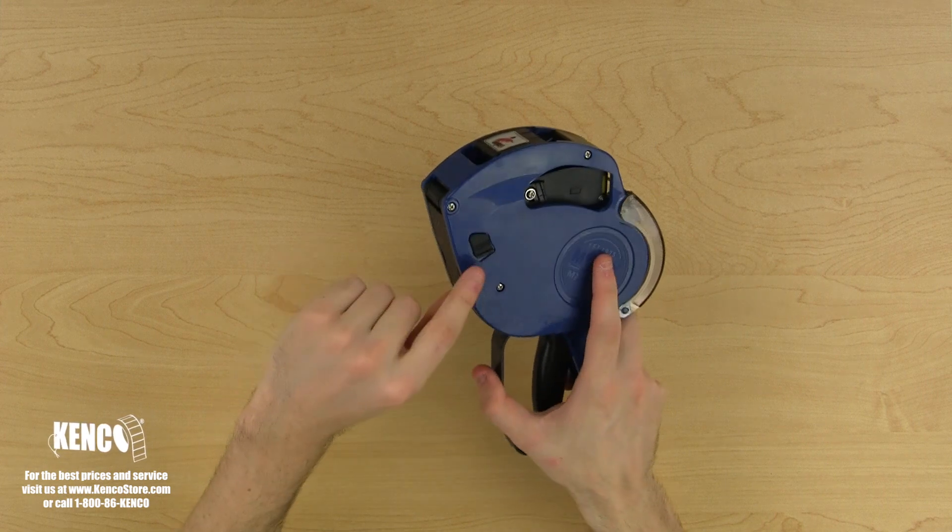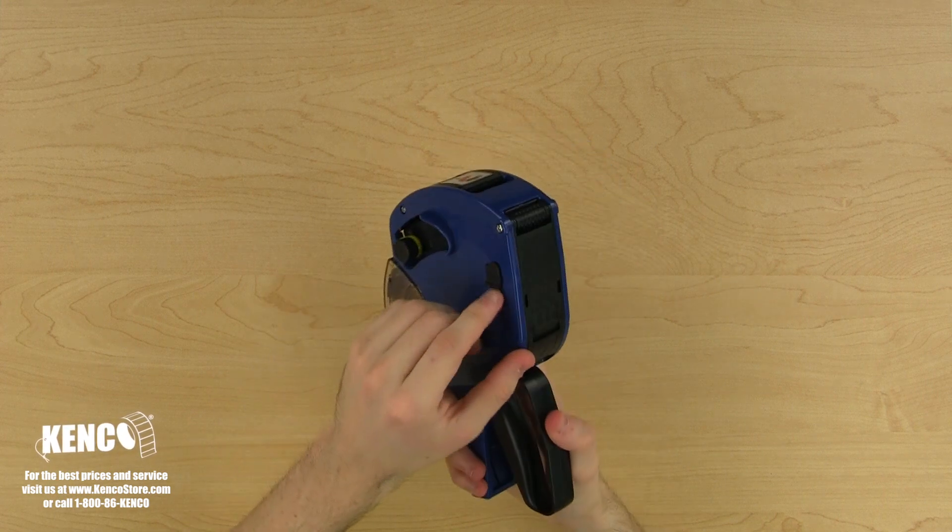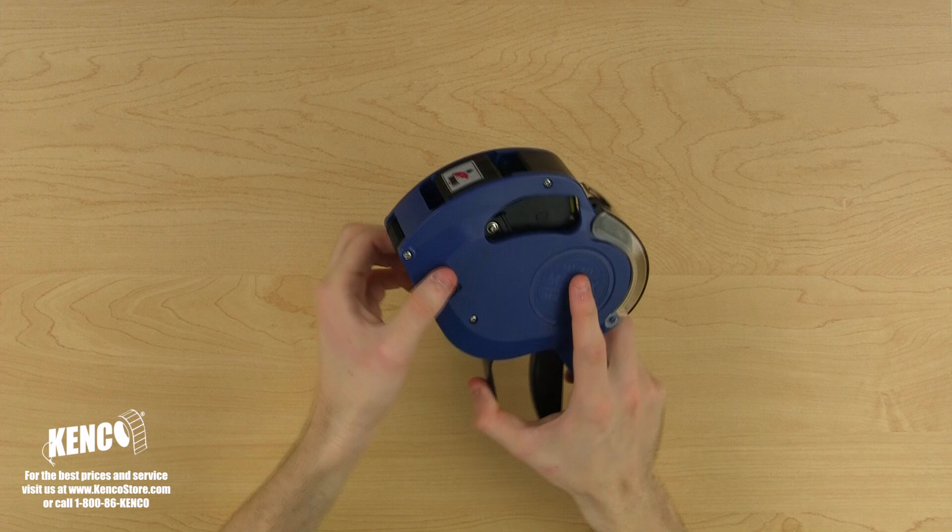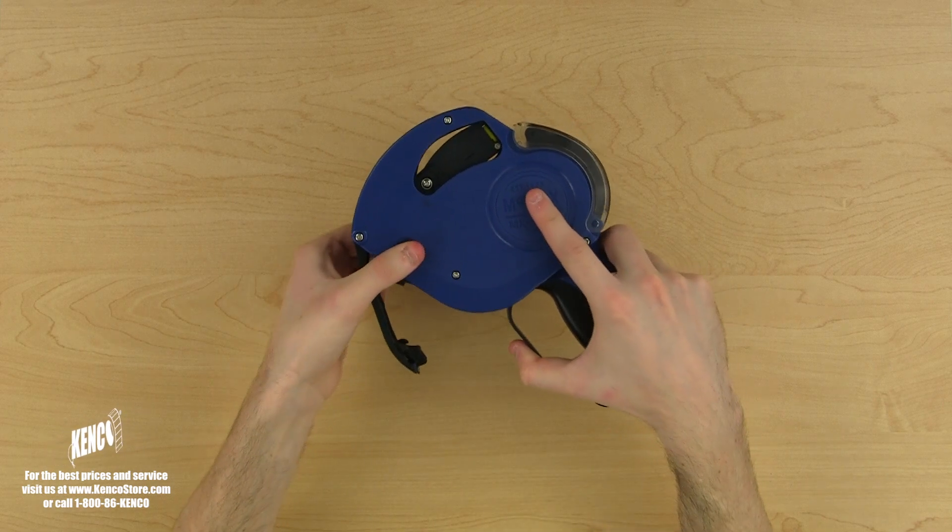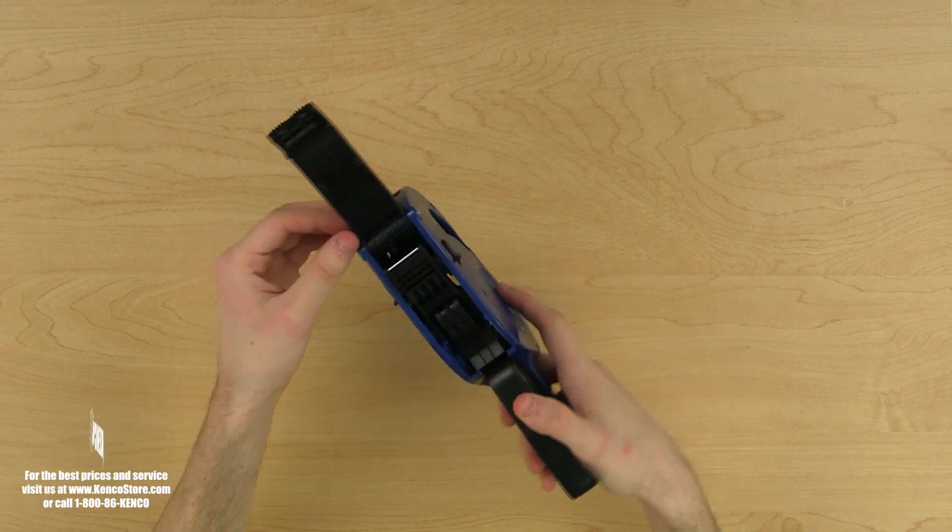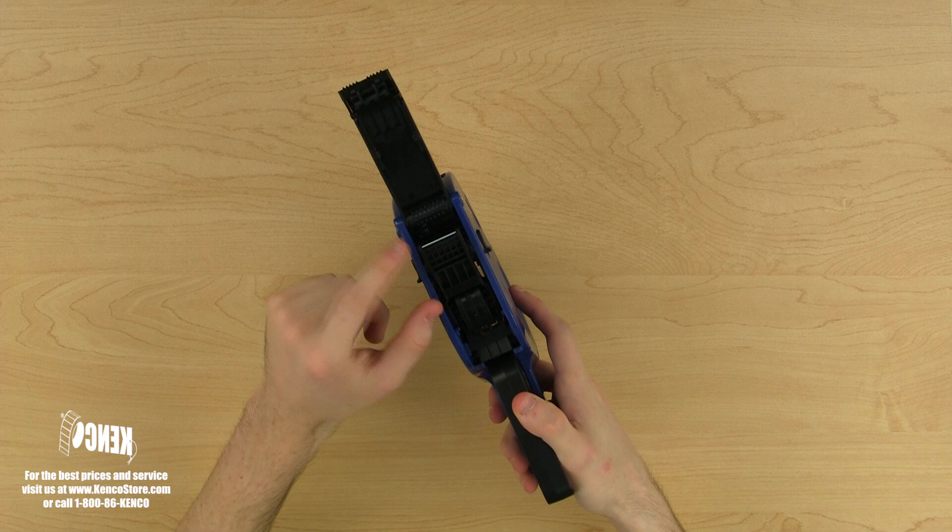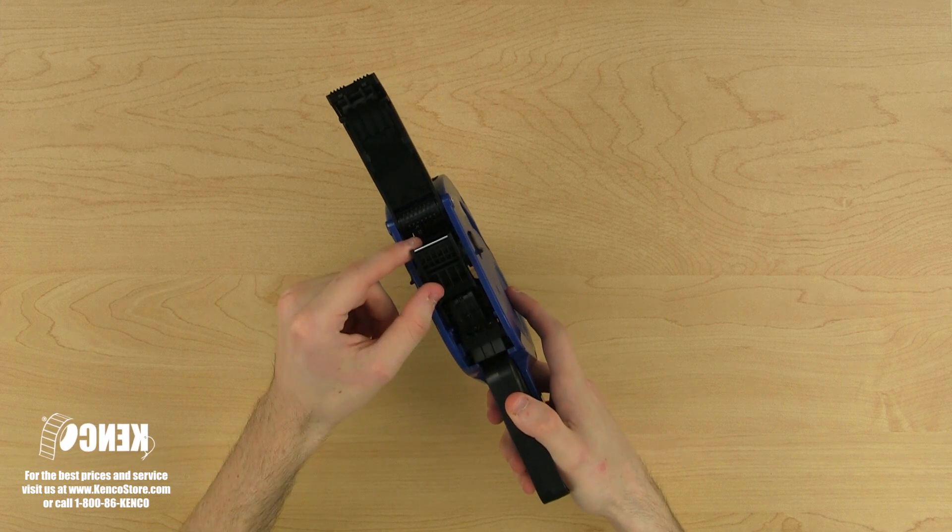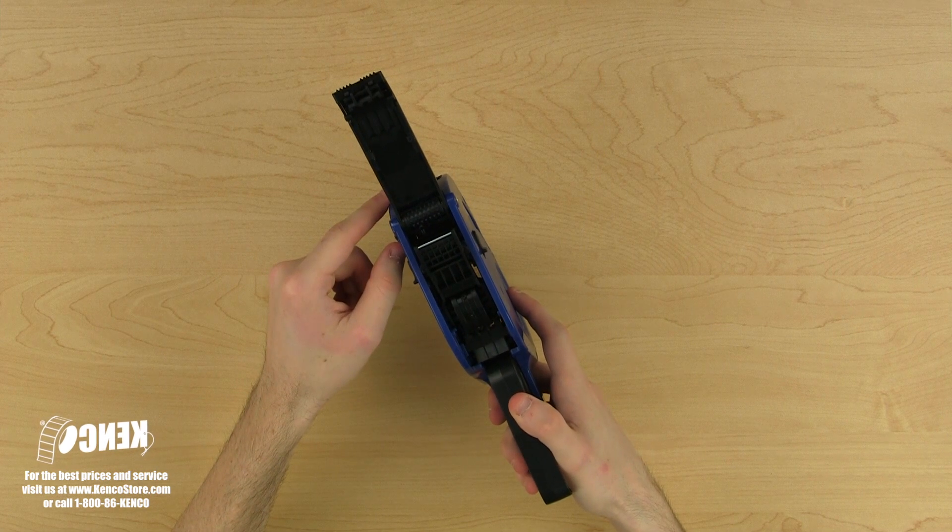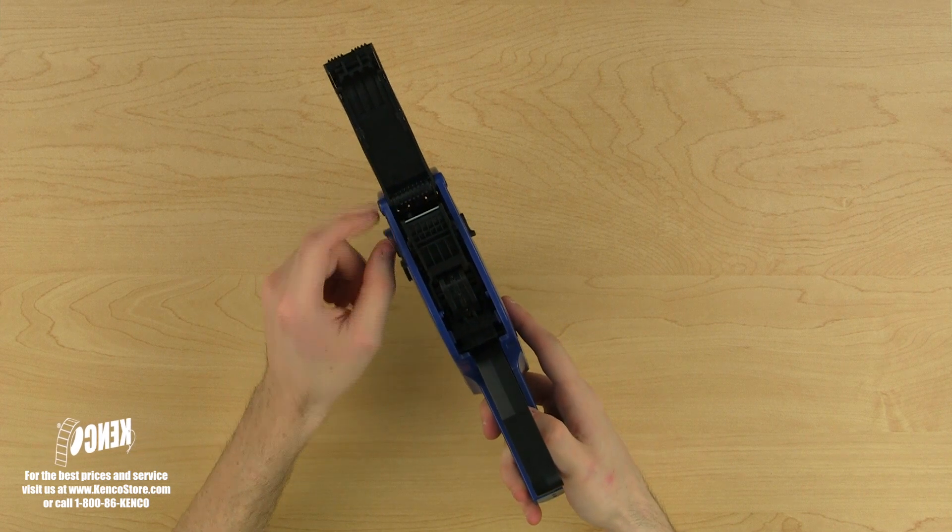On the top, you'll see the nip roller. The nip roller will help apply the label to your product. Next, we'll take a look at the inside of the bottom cover. To open the bottom cover, use your thumb and index finger to grip the cover latches and pull them towards the handle of the gun.